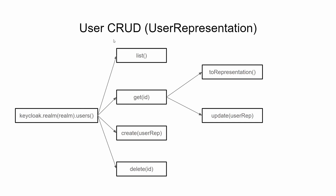For user CRUD operations, the object or class being used in Keycloak will be UserRepresentation. All of these operations we are going to perform within the Spring Boot application. keycloak.realm with the realm name .users().list() gives you the list of UserRepresentations, and .create() by sending a UserRepresentation object will create a new user. .delete(id) will delete that specific user, and users.get(id) will provide a pointer to that specific user. .toRepresentation() gives the UserRepresentation object, and .update() with the UserRepresentation object will update that specific user.